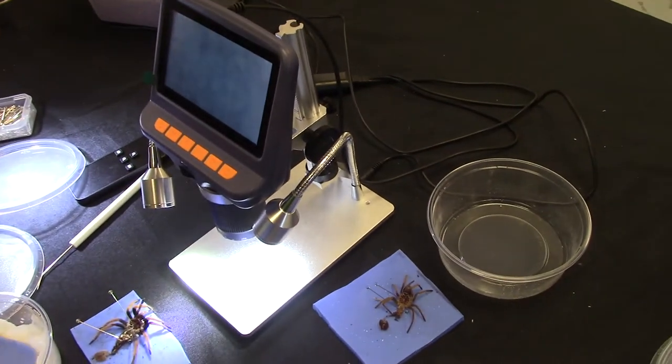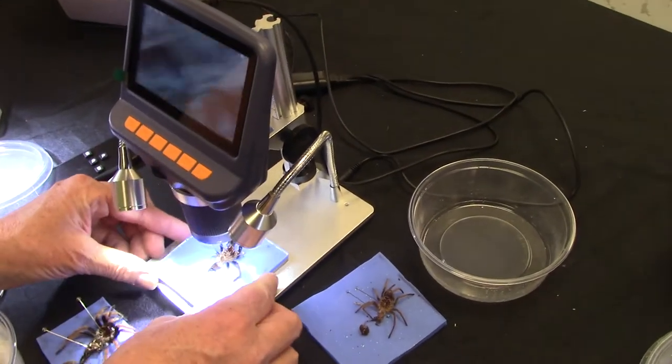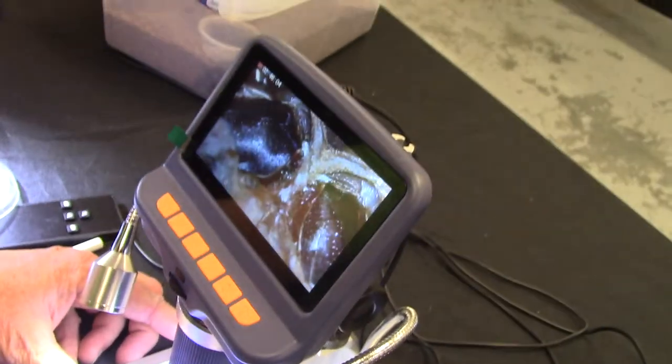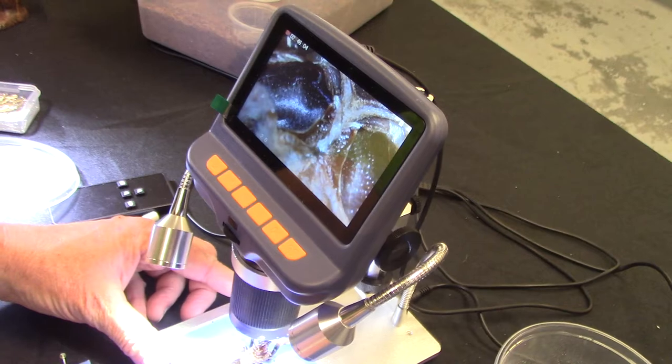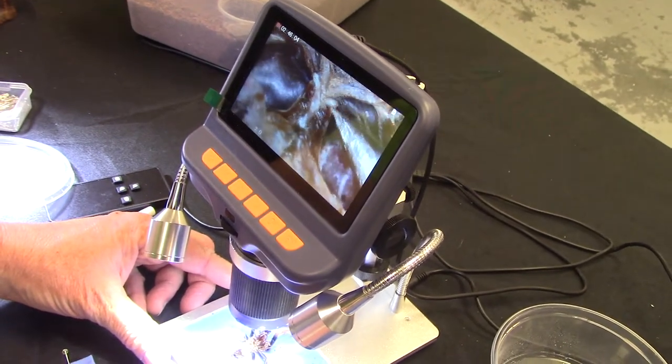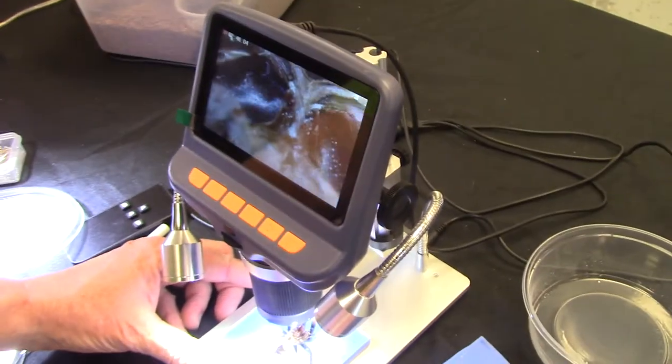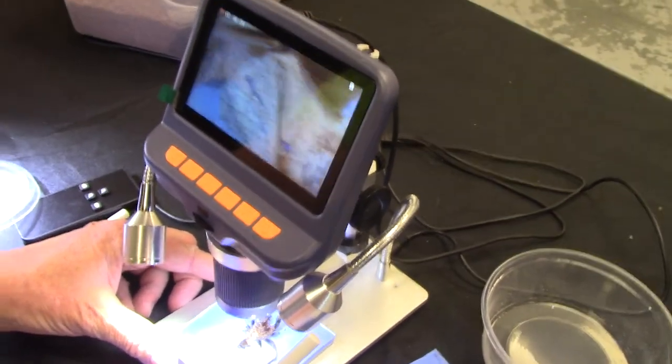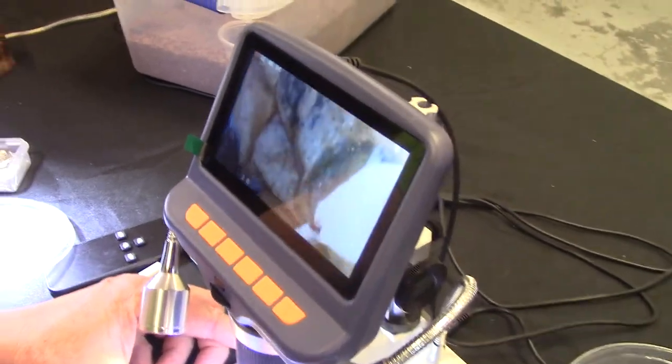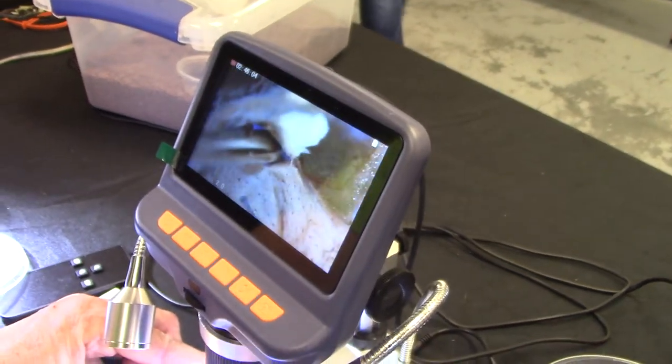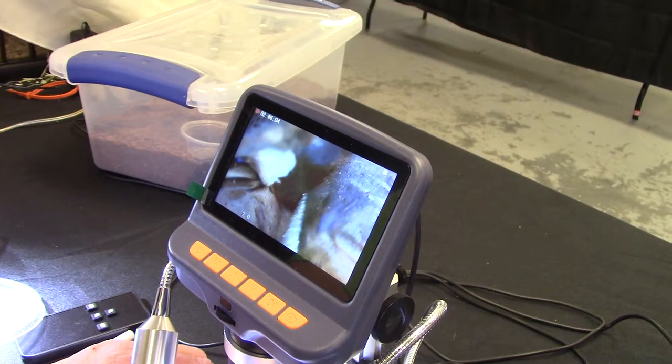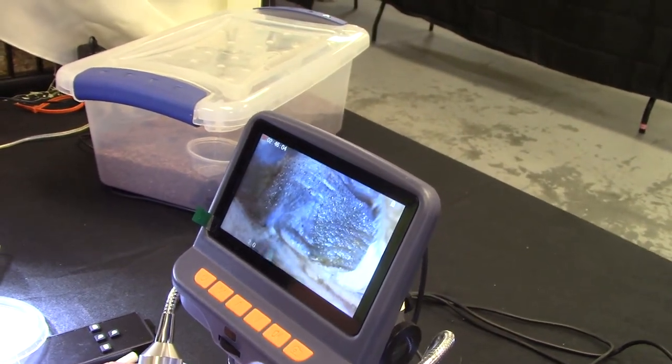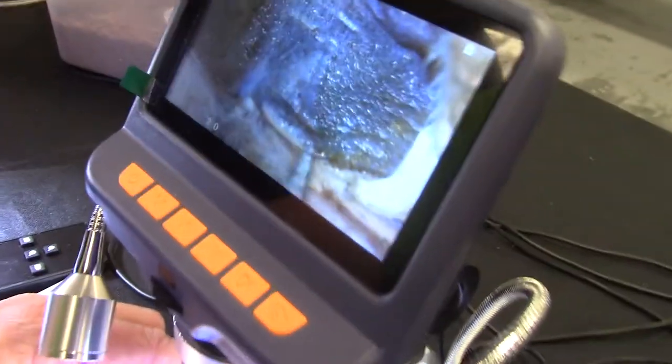This is from a Brachypelma Baumgarteni, Mexican Orange Beauty. Wow, that is absolutely amazing. But you see, this is not spermathecae. No, I know that. It's all the way down here. So we're looking for the spot right here. And sometimes you need, and as you can see, it is a male. There are no spermathecae in here.